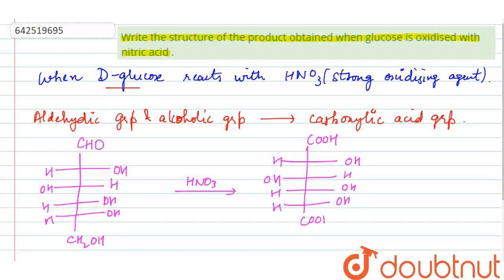Also alcohol will be converted into carboxylic acid. The name of this compound is saccharic acid.